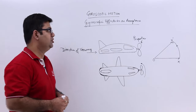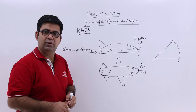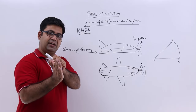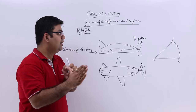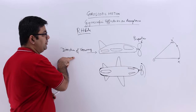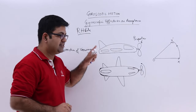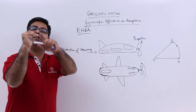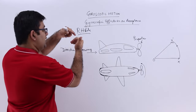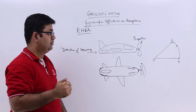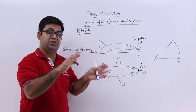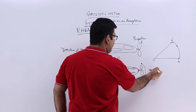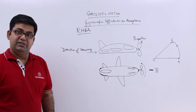Now, the rule that we follow is called the right-hand rule. In the right-hand rule, we use the right hand — the thumb gives you the direction of the axis of spin, and the direction of the motion of the hand will tell us about the precessional motion. If I am looking from the rear end of the aircraft and the propeller is rotating in a counterclockwise direction, I will curl my fingers in the anti-clockwise direction. The curl of the fingers gives the direction of rotation, and the thumb gives the axis.